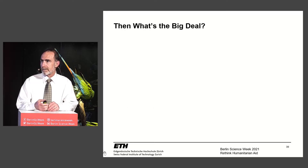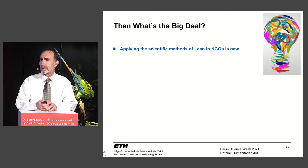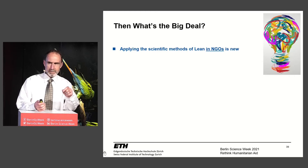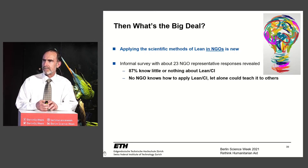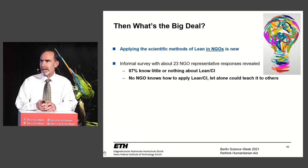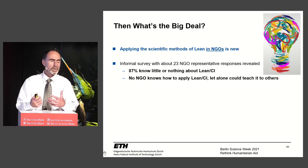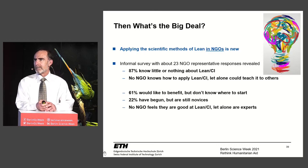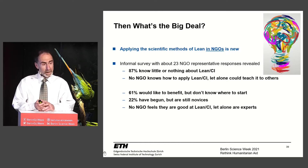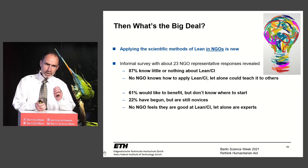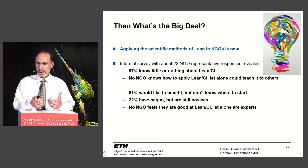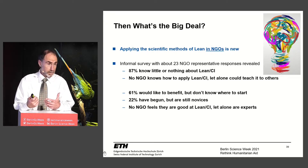A recent informal survey of leaders in humanitarian organizations found that 87% know little to nothing about lean, and none said they know it well enough to teach others. Yet 61% said they would like to benefit from lean. There's an opportunity to light the fuse here. Development and humanitarian principles are actually very similar to lean principles — respecting people, providing value rather than telling them what to do, working with communities.